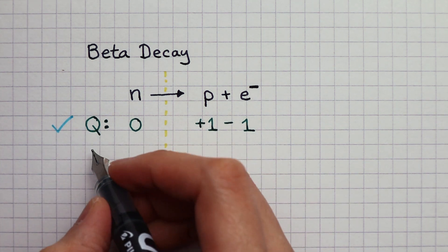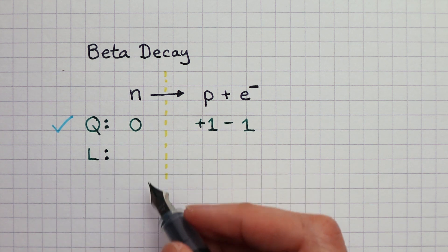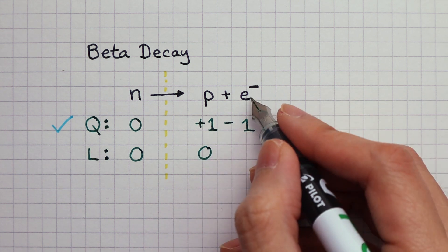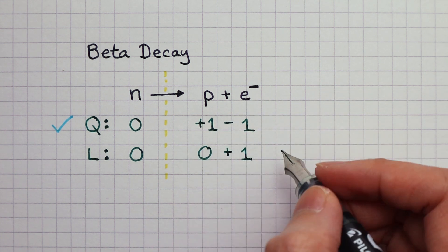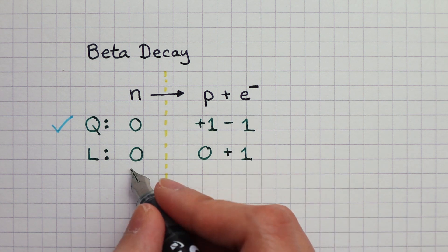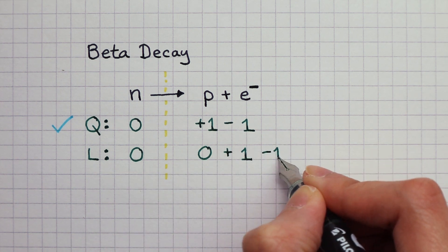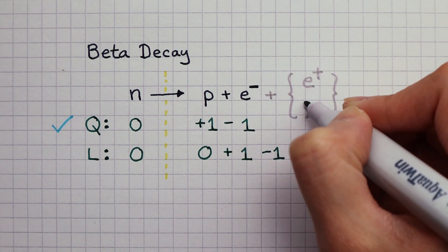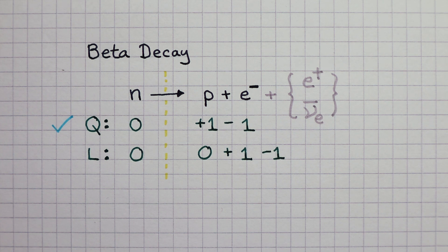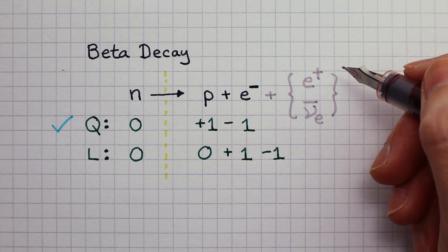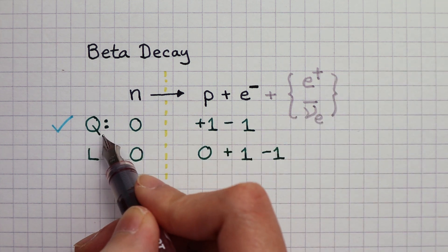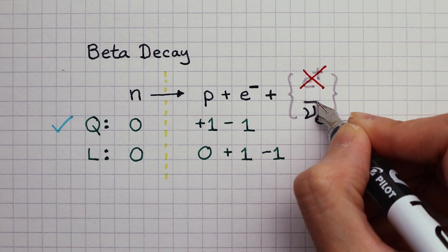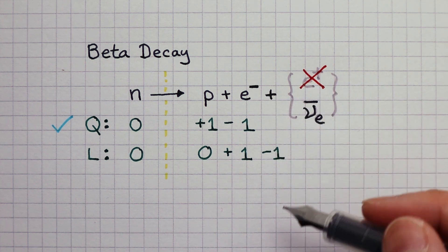What about the lepton number? Neutrons and protons are not leptons, so their lepton number is zero. Electron has a lepton number of plus one. The two sides will not balance unless we put a minus one on the right-hand side. Either the anti-electron or the anti-electron neutrino might work. If I choose the anti-electron, which has a charge of minus one, that will unbalance the charge. So the only option here is the anti-electron neutrino, which has no charge but a lepton number of minus one.